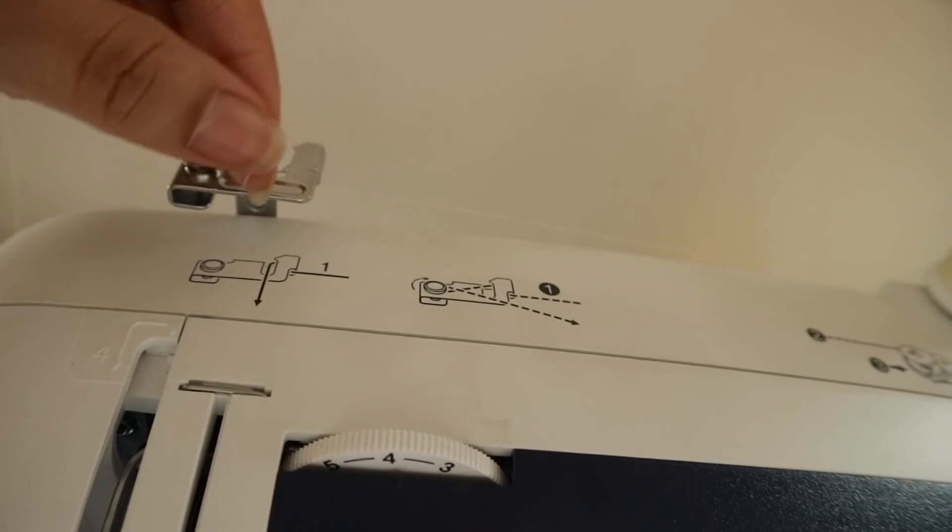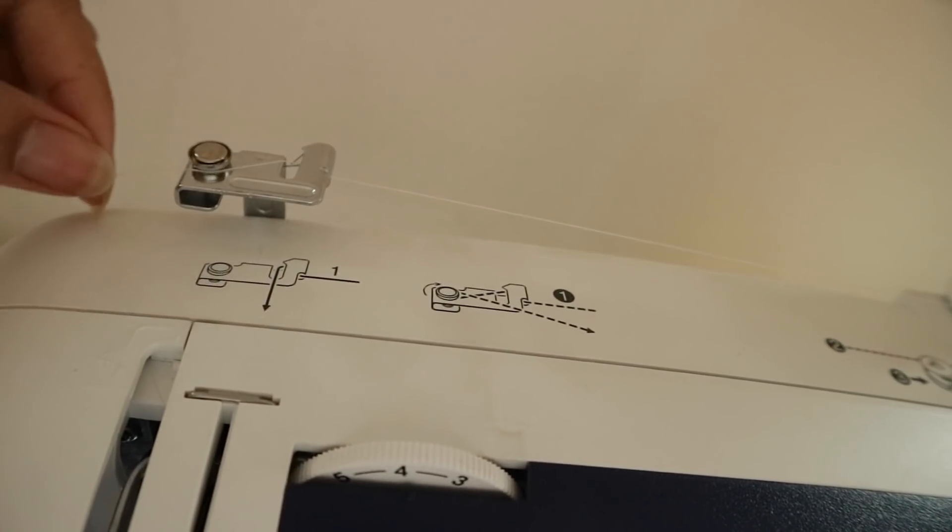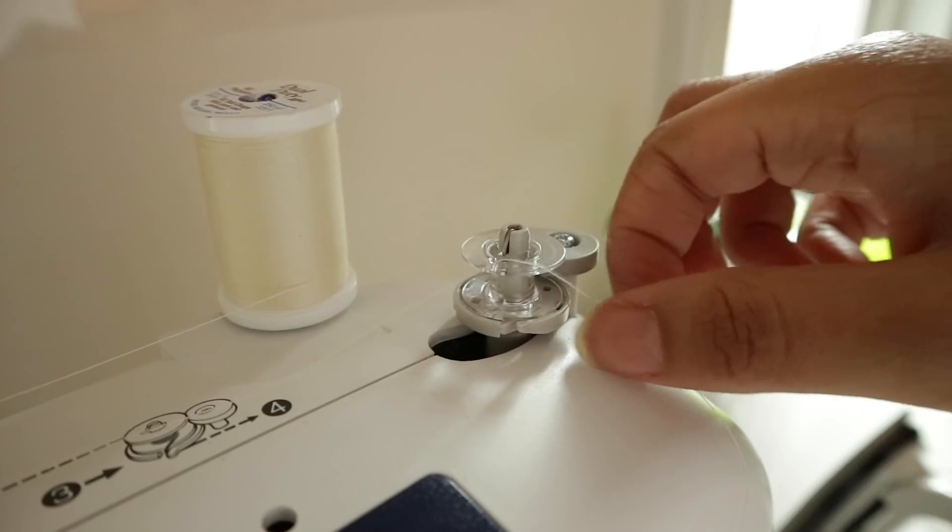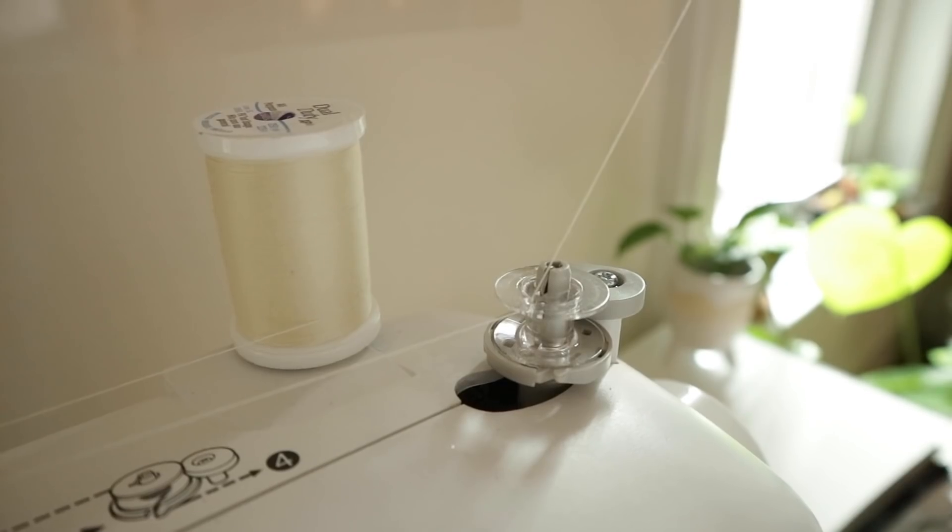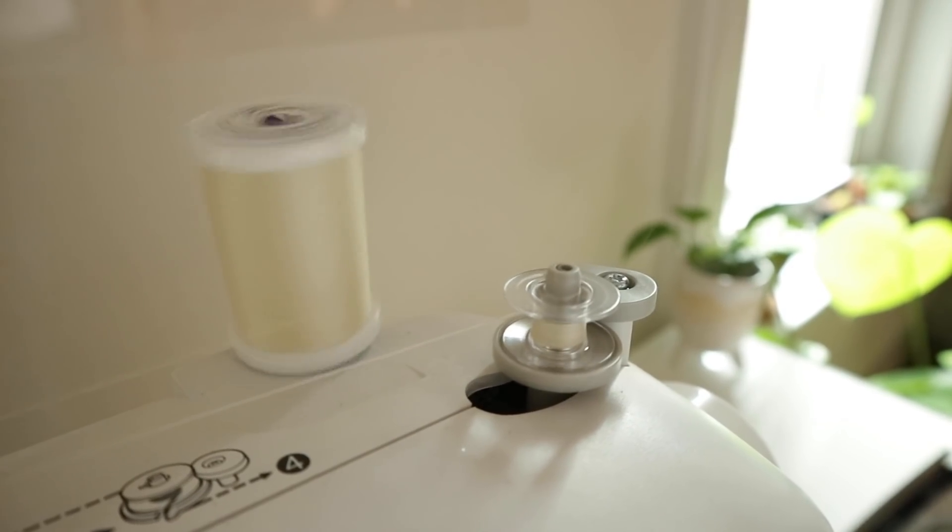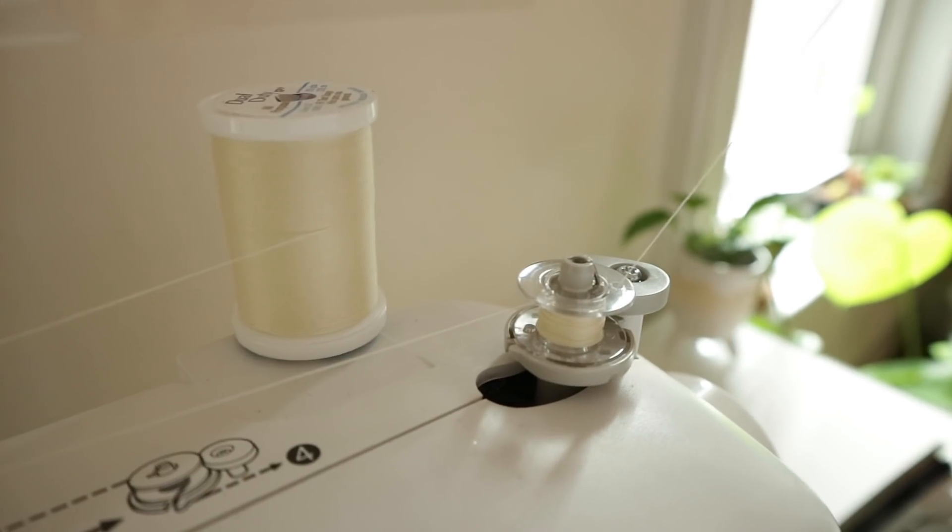The first step is to create a bobbin of the thread that you're using. So to do that, I just follow the directions that are on the sewing machine. That process is going to look a little something like this. Then I push this to the right, which tells the machine that I want it to spin the bobbin instead of focusing on the needle. And when I'm done, I switch it back.